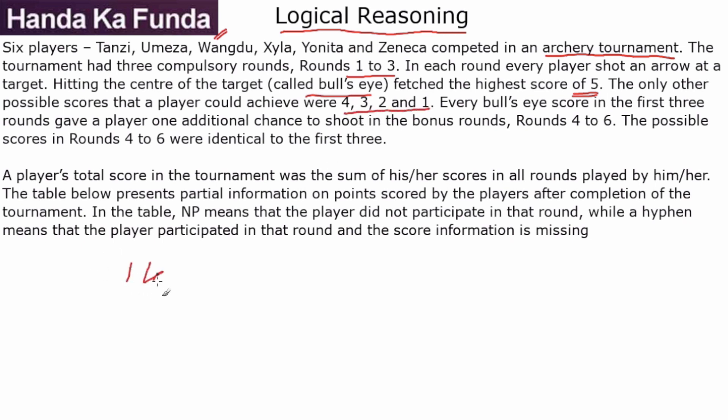That means he can score anything from 1 to 5 in one particular round, or a maximum of 15 and a minimum of 3 in the first three rounds. Every bull's eye score in the first three rounds gave a player one additional chance to shoot for the bonus rounds, which are rounds 4 to 6. The possible scores in rounds 4 to 6 were identical to the first three.